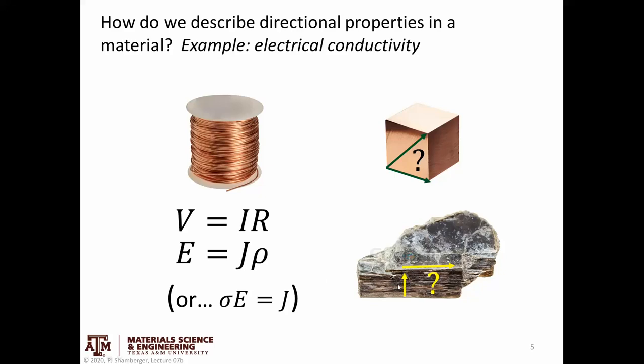I know I have very strong bonding in the plane, weaker bonding between the planes. Do you think resistivity would be the same if I'm measuring it horizontally or vertically? And the answer is no, it should not be.